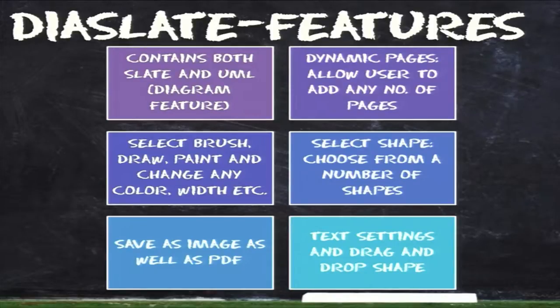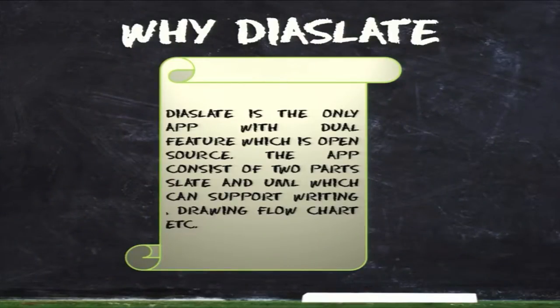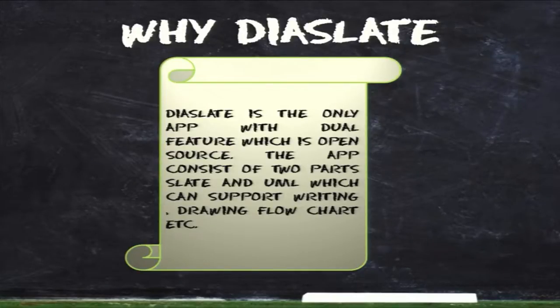We can save drawings either as a PDF or as an image. The UML part of this application is still a prototype, so the features implemented are drawing shapes, connecting the shapes, adding text to these entities, and saving the UML diagrams as images. We might have heard of apps similar to the slate which help in drawing and erasing, and there are also apps which help draw UML diagrams, but Dyer Slate integrates the best features of both.